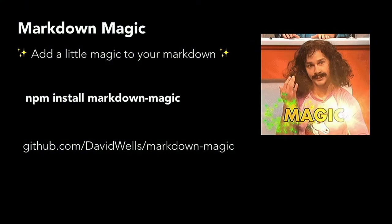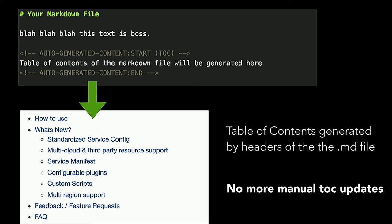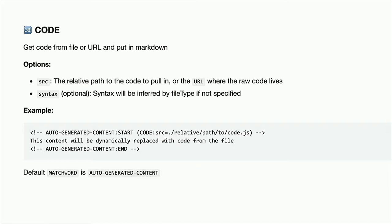Another thing we use very heavily is a package that I wrote called Markdown Magic. What it does is in your Markdown you can use a comment block — invisible in GitHub — and when you run it through Markdown Magic it'll auto-generate content inside that block. For example, it will automatically generate a table of contents for your readme file by putting in a content block. You can also pull in source code — if you've ever had to manually update a table of contents or code example in a Markdown file, don't do that anymore. You can simply add a content block, give it the path to the code, and it'll inline it for you.